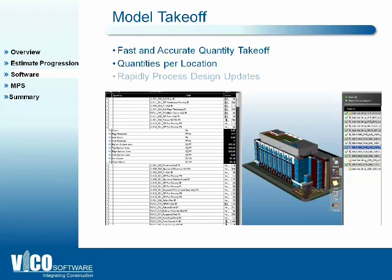Let me show you this now in the software. What I'm showing here is the model — here are all the different models. Currently we can support Revit, Archicad, CadDuct, IFC, and Tekla, and bring them all into our system as a common platform. So we can get models from different sources, bring them all together, and get quantity takeoff for all of them. This is a list of takeoff items generated from the model, and if we open any of these, we can see the different quantities which are available for estimating.